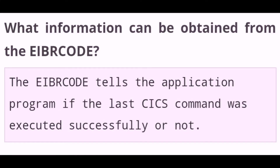What information can be obtained from the EIB code? The EIB code tells the application program whether the last CICS command was executed successfully or not.